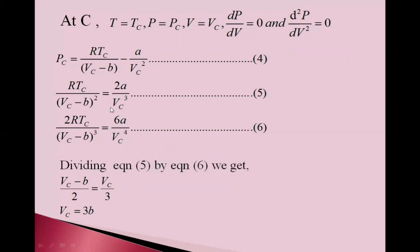Dividing equation 5 by 6, we get Vc minus b upon 2 is equal to Vc upon 3. So, from this we get Vc is equal to 3b.